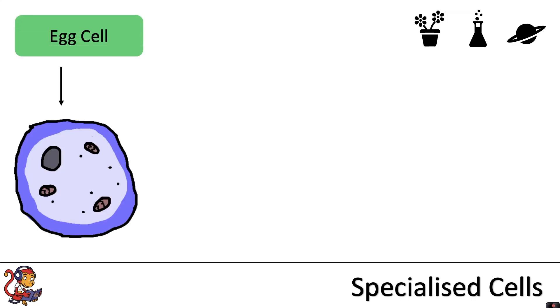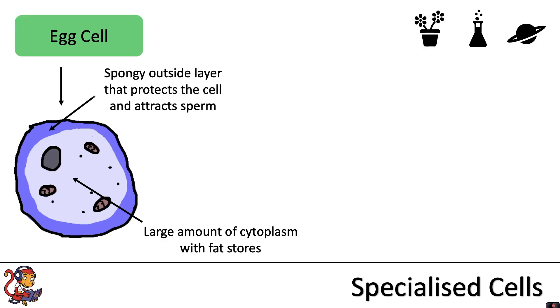Let's first look at some specialised animal cells. We've got the egg cell, and this is specialised by having a large amount of cytoplasm with fat stores. It also has a spongy outside layer that protects the cell and attracts sperm.